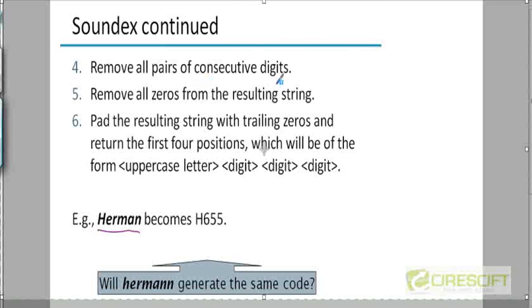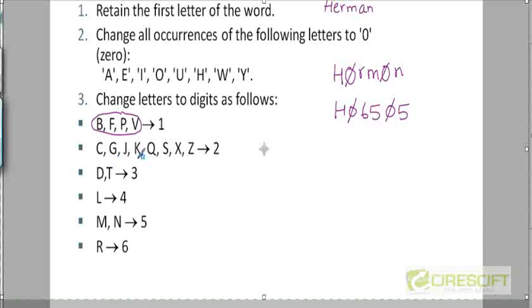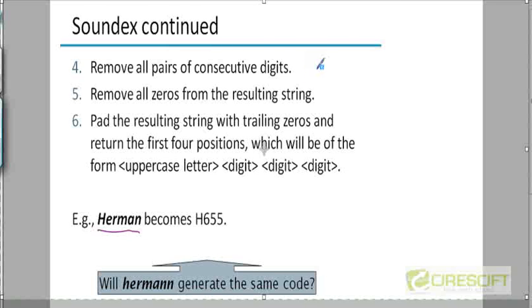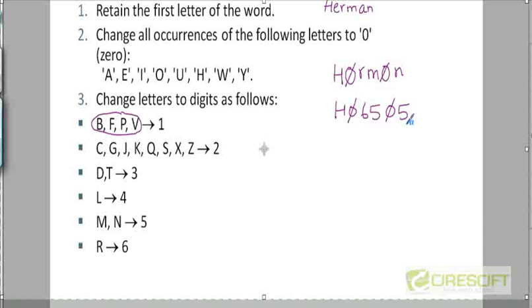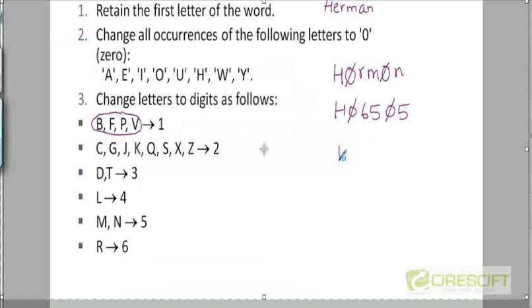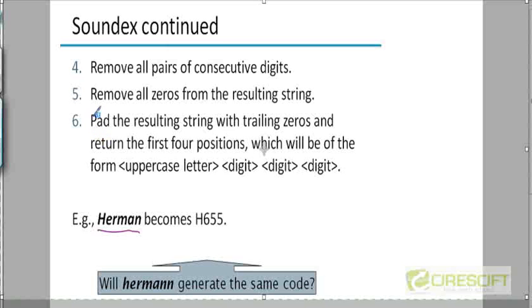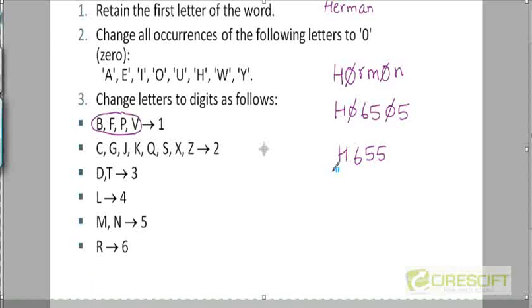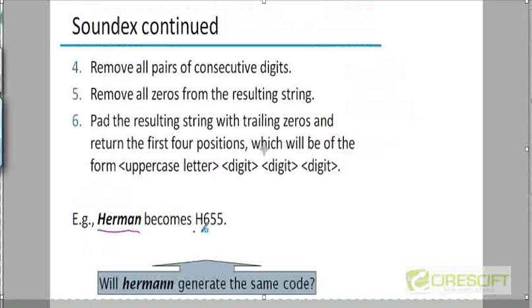Then we will remove all pairs of consecutive digits, because consecutive digits will be two consonants that sound similar. We don't have any consecutive digits here, so it remains as it is. Then we'll remove all the zeros from the resulting string. These two zeros will go and we'll get H655. If the resulting string is more than four positions long, we'll truncate it to four positions. If it's less, we'll pad with trailing zeros. The Soundex representation of Herman will be H655.